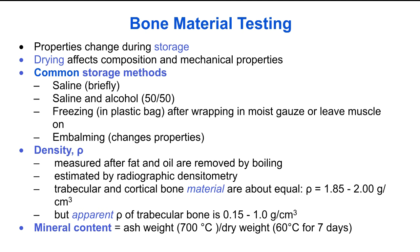The mineral content can be measured by measuring the ash weight divided by the dry weight. The ash weight is the weight of the bone after it's been burned at 700 degrees Celsius, and the dry weight is the weight of the bone after it's been dried at 60 degrees Celsius for 7 days.